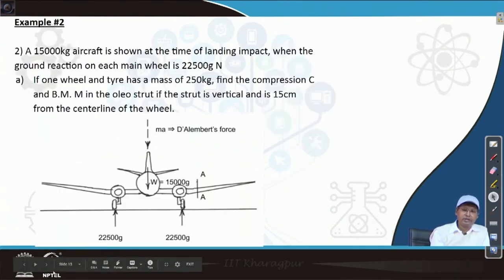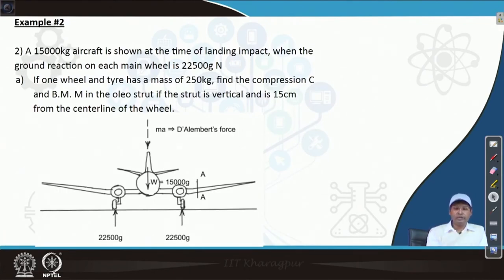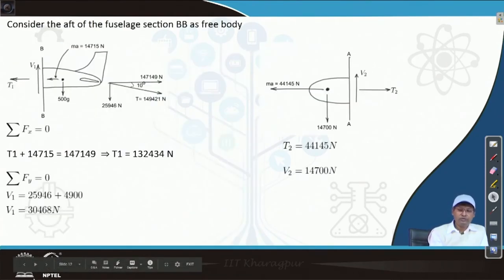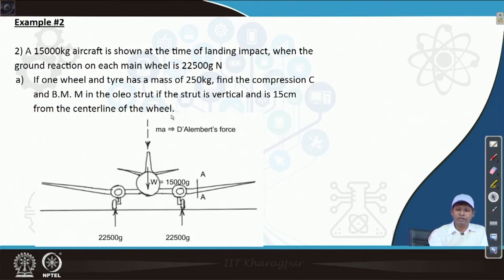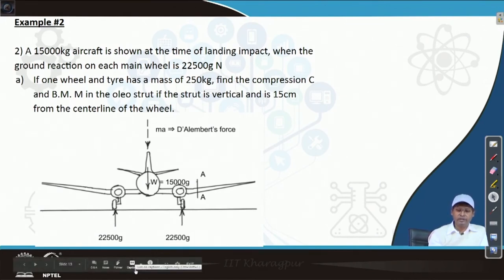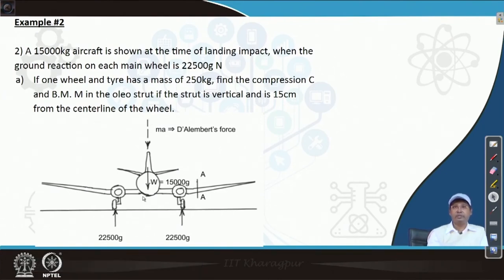Example 2: This example is about landing impact. An important part is the application of D'Alembert's principle. Since the aircraft is decelerating upon landing, the inertia load M·A acts downward — in the direction of deceleration — by D'Alembert's principle. Please keep this in mind as we go to the problem.